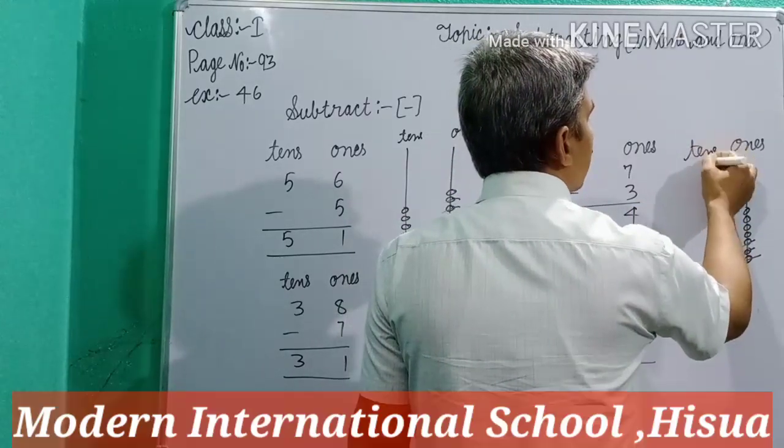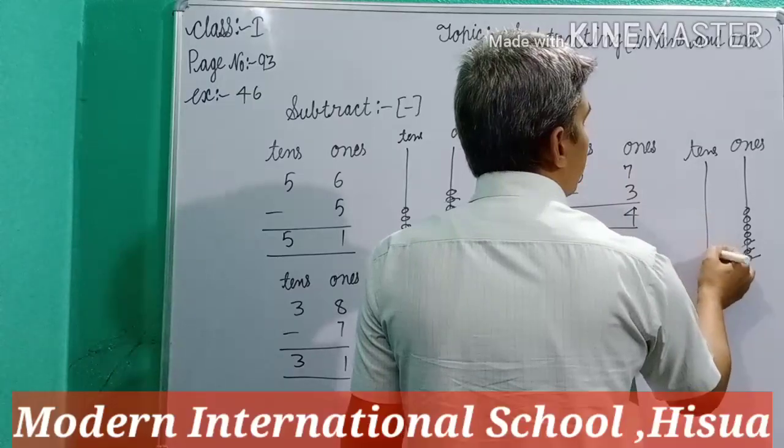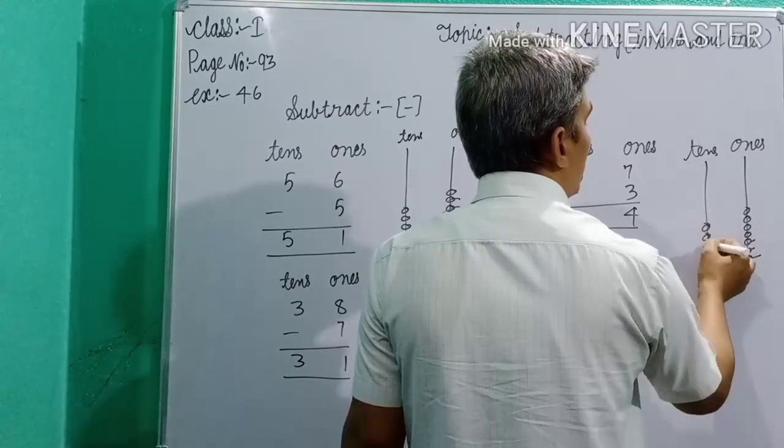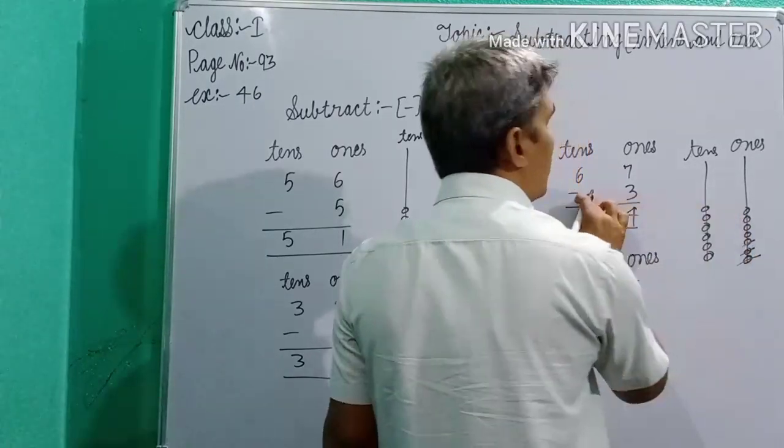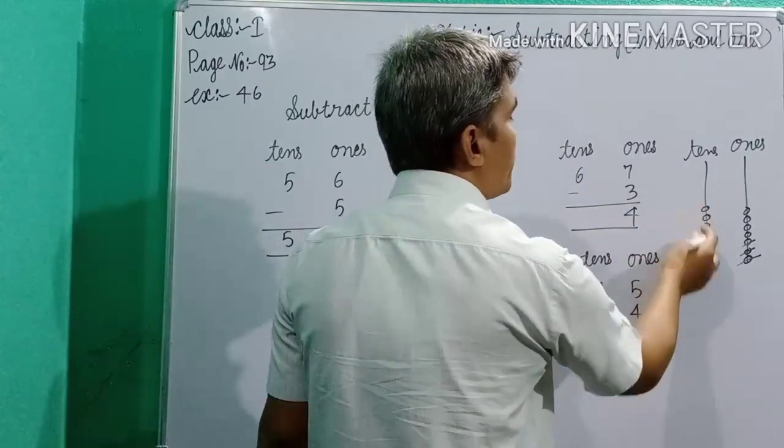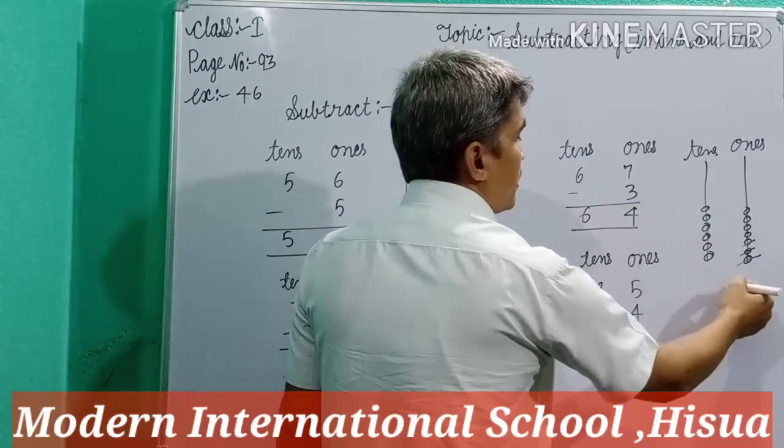For tens place, 6. Make 6 bits: 1, 2, 3, 4, 5, 6. Here, no any numbers. So, no any bits cancel. So, you write here 6. Now,